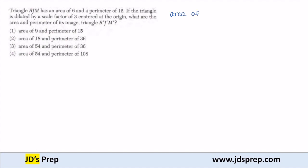triangle RJM has an area of 6 and a perimeter of 12. So area of RJM equals 6, and the perimeter is 12. If the triangle is dilated by a scale factor of 3, centered at the origin, what are the area and perimeter of its image?